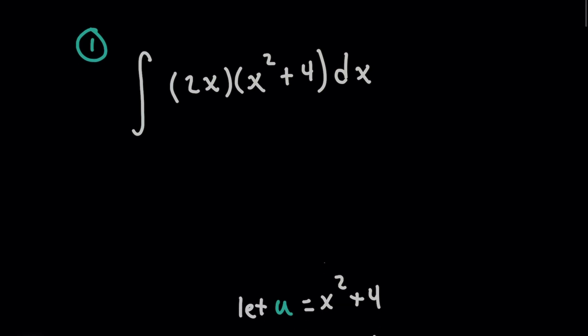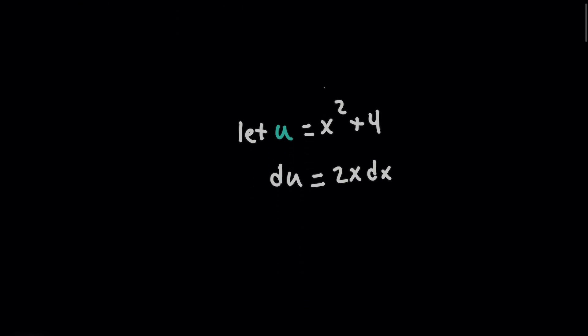Now, with this integral, when I do a u substitution, I would let u equal x squared plus 4, and then du would be 2x dx after taking the derivative of both sides. And then when I plug in u into the original problem, this leaves me with a very simple polynomial to integrate.